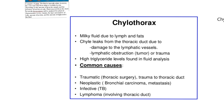To summarize chylothorax: it's a milky fluid due to lymph and fats. It leaks from the thoracic duct, which is the final pathway of lymph being returned from the body to the vena cava. There may be damage to the lymph vessels, obstruction, or trauma. Common causes include traumatic injury or surgery, neoplastic disease such as cancer, or an infective disease — perhaps a tumor involving the duct preventing fluid from returning to the blood.